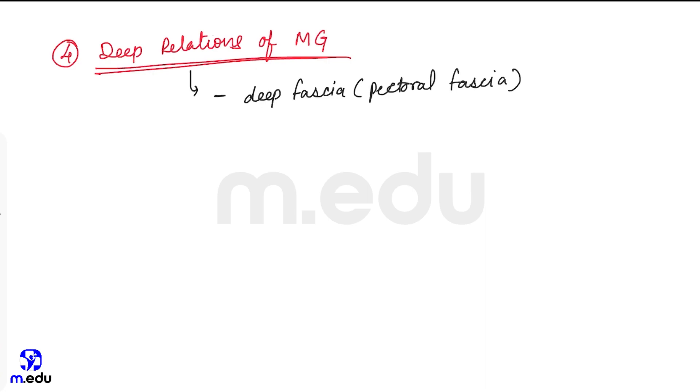It covers pectoralis major muscle. Deeper to it lies three muscles: first one is pectoralis major, serratus anterior, and third one is external oblique muscle.